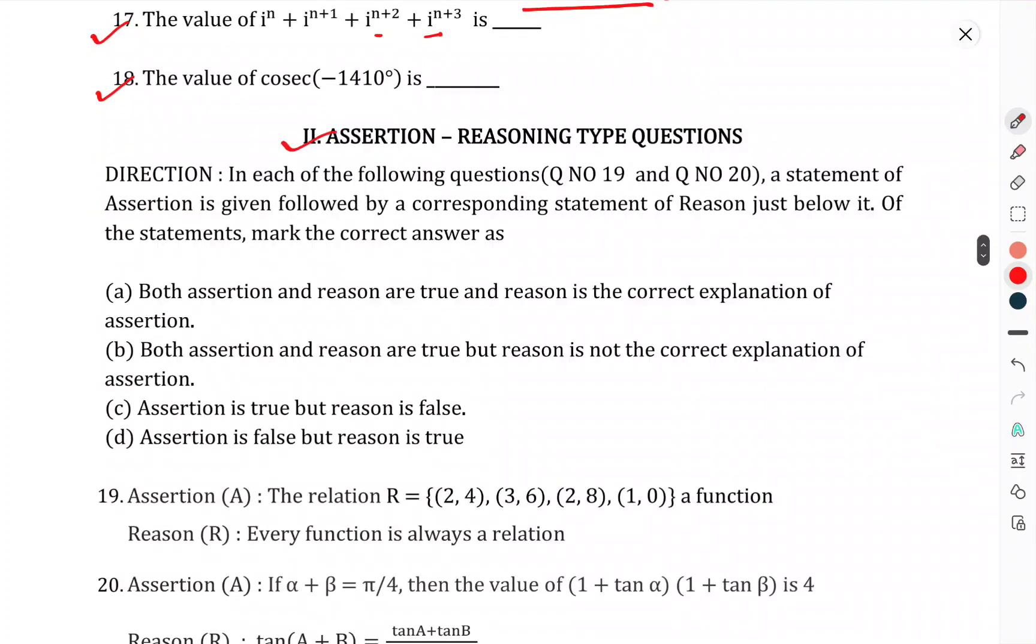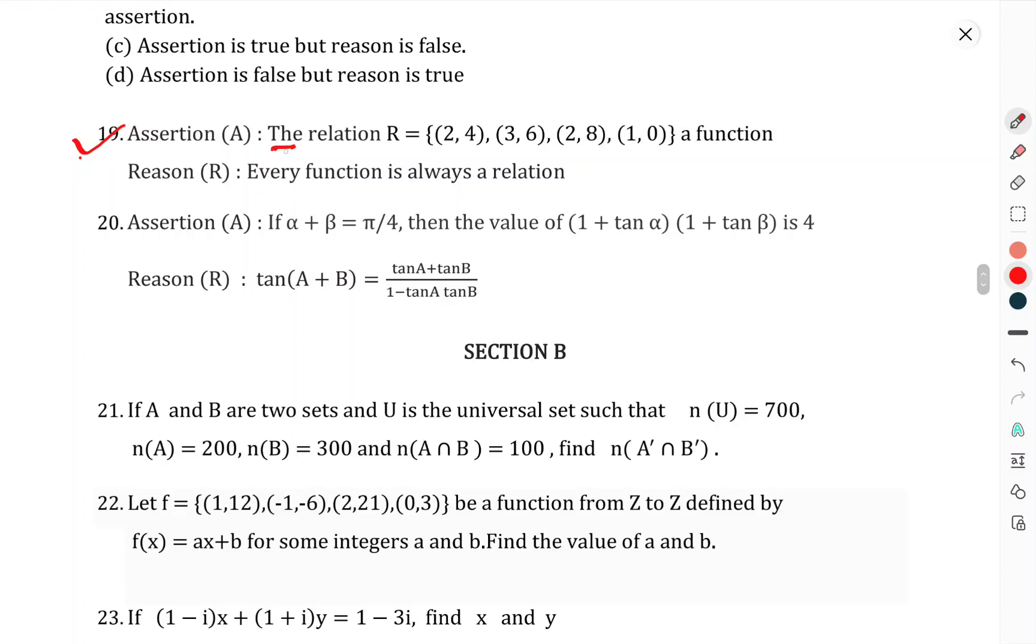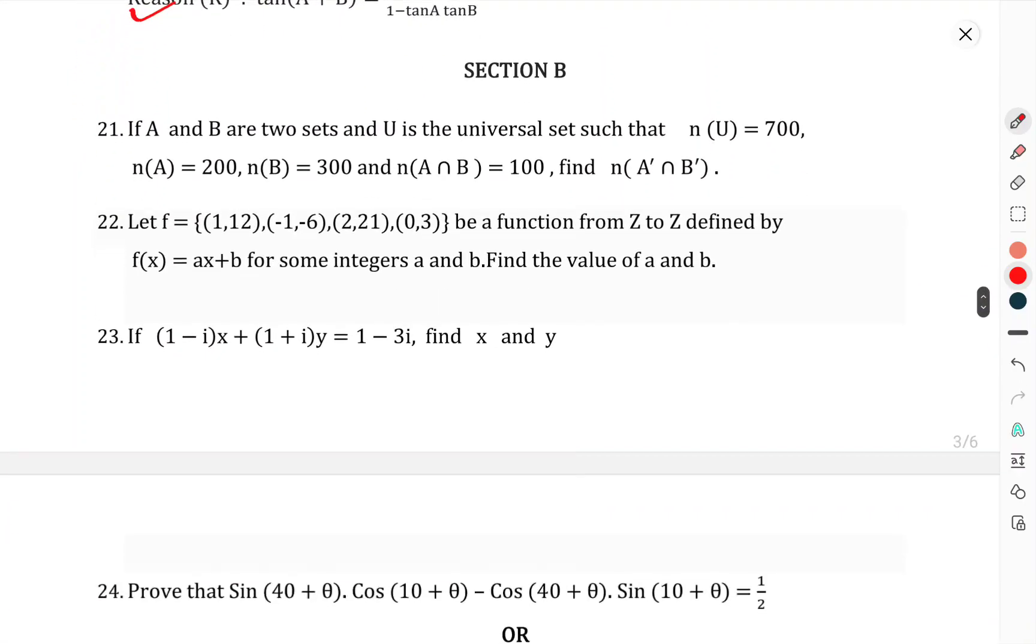Assertion-reason type questions, second portion. In each of the following, question number 19 and question number 20, a statement of assertion is given followed by the corresponding statement of reason just below it. Of these statements, mark the correct answer. Question 19: Assertion - R = {(2,4), (3,6), (2,8), (1,0)} is a function. Reason - Every function is always a relation. Question 20: Assertion - If α + β equals π/4, then the value of (1 + tan α)(1 + tan β) is 4. Reason - tan(α + β) equals (tan α + tan β)/(1 - tan α tan β).